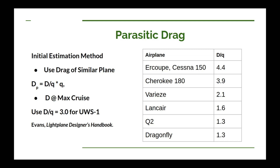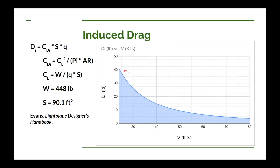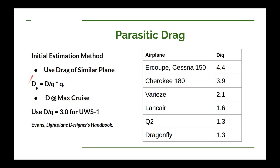Parasitic drag is a little more difficult to calculate, and I'm going to demonstrate one of the ways frequently found in amateur airplane design books. That's to use a quantity D over Q, where D is your drag and Q is your dynamic pressure. You find D over Q for an airplane similar to yours, multiply by Q at whatever speed you're interested in, and that gives you the parasitic drag. You want to get your D over Q value at maximum cruise speed, where induced drag is minimum, so parasitic drag is the dominant component — making it a reasonable initial estimate.